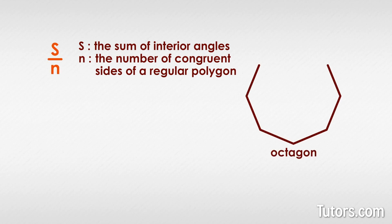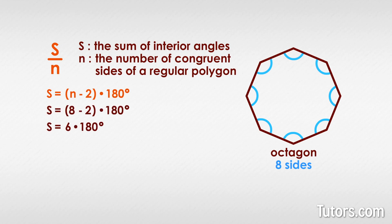Here is an octagon, 8 sides, 8 interior angles. First, we use the formula for finding the sum of interior angles. Next, we divide that sum by the number of sides. Each interior angle of a regular octagon is equal to 135 degrees.